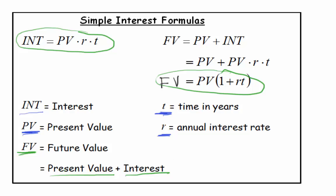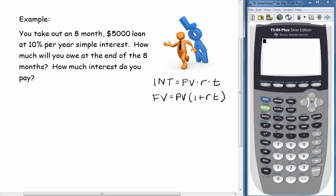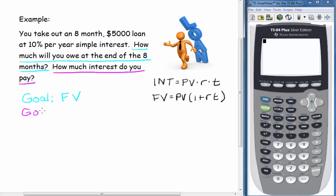Let's go back to that problem. We take out an 8-month $5,000 loan at 10% per year simple interest. Our goal is to figure out how much we owe at the end of the 8 months and how much interest we pay. For the first question — how much do we owe at the end of 8 months — the goal is to find the future value. For the second question — how much interest do you pay — the goal is to find the interest. Now we need to figure out what information we are given.